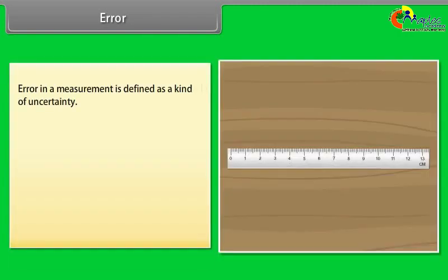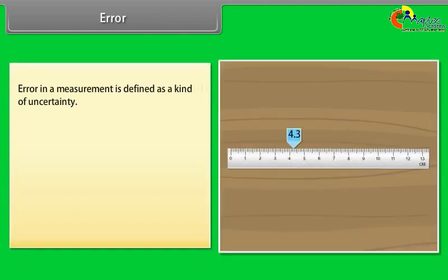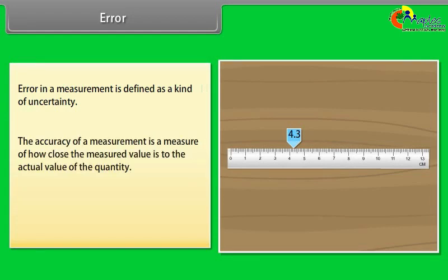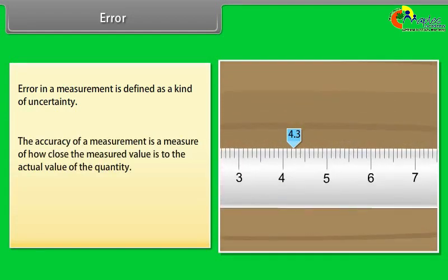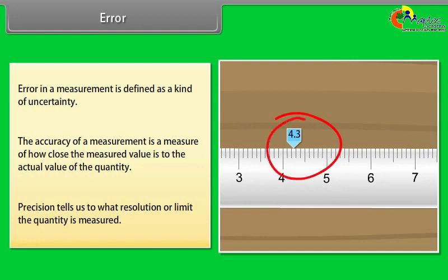Error. The result of every measurement by any measuring instrument contains some uncertainty. Error in a measurement is defined as a kind of uncertainty. The accuracy of a measurement is a measure of how close the measured value is to the actual value of the quantity.